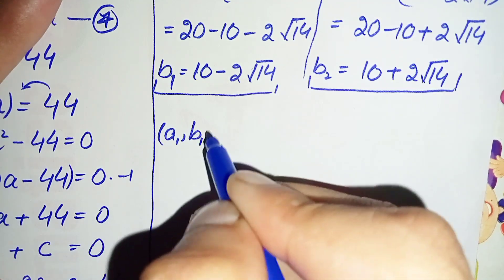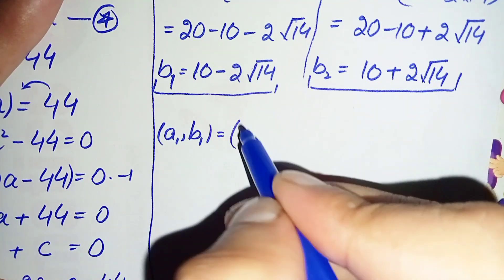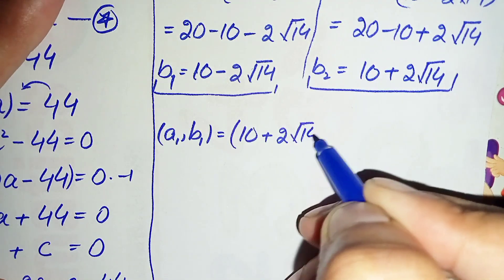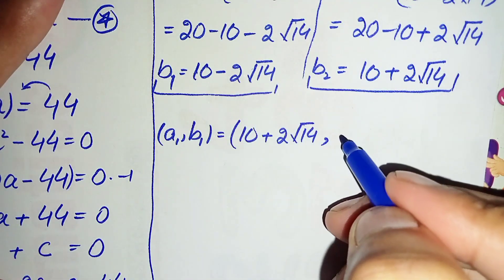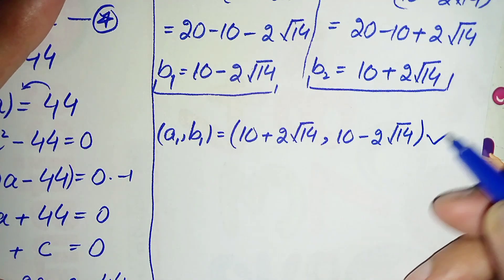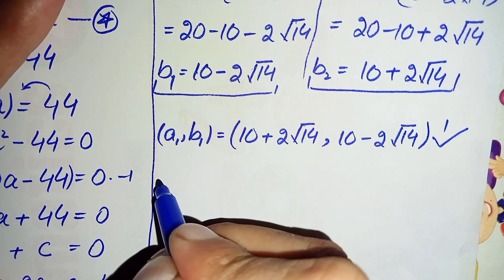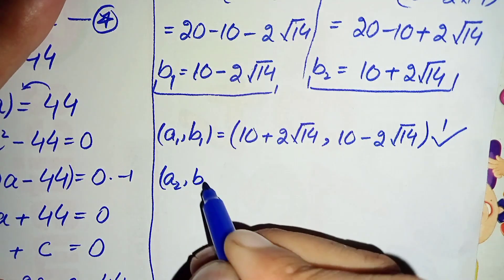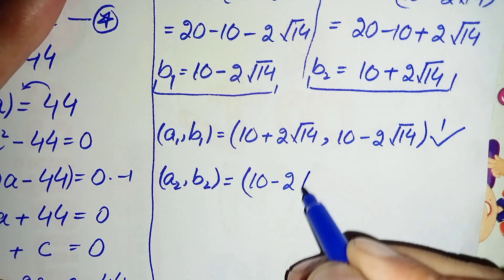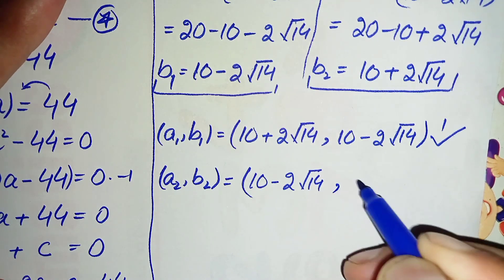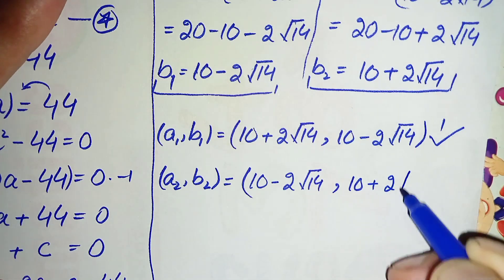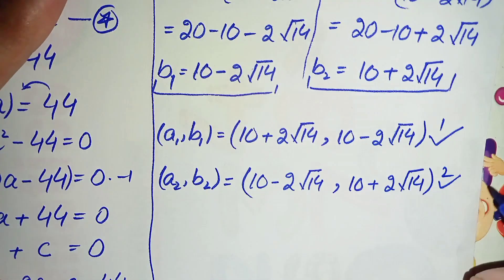So we have two possible solutions. The first solution is a1 = 10 plus 2 times root 14, b1 = 10 minus 2 times root 14. The second solution is a2 = 10 minus 2 times root 14, b2 = 10 plus 2 times root 14.